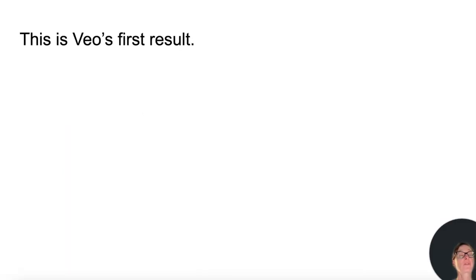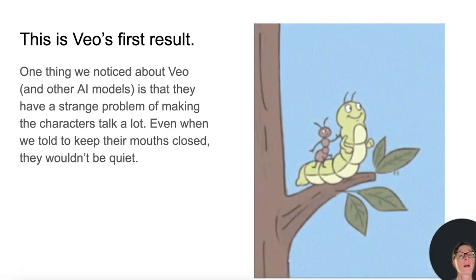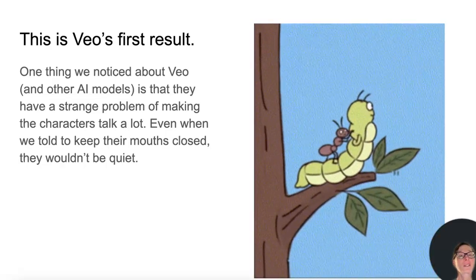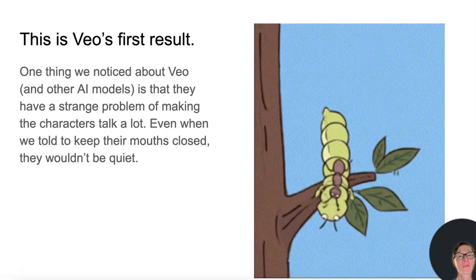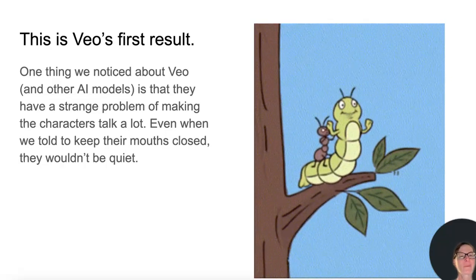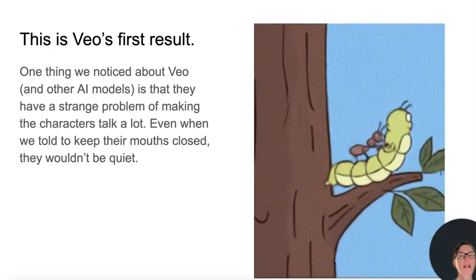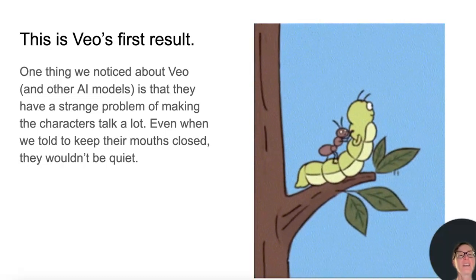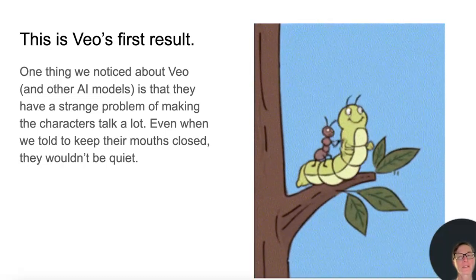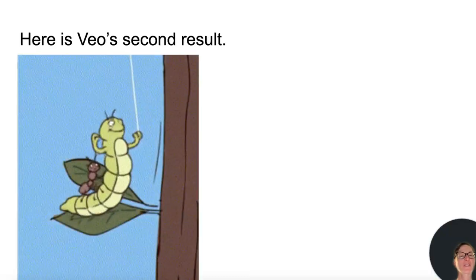This is Veo's first result. One thing we noticed about Veo and other AI models is that they have a strange problem of making the characters talk — a lot. Even when we told them to keep their mouths closed, they wouldn't be quiet. Here's Veo's second result.